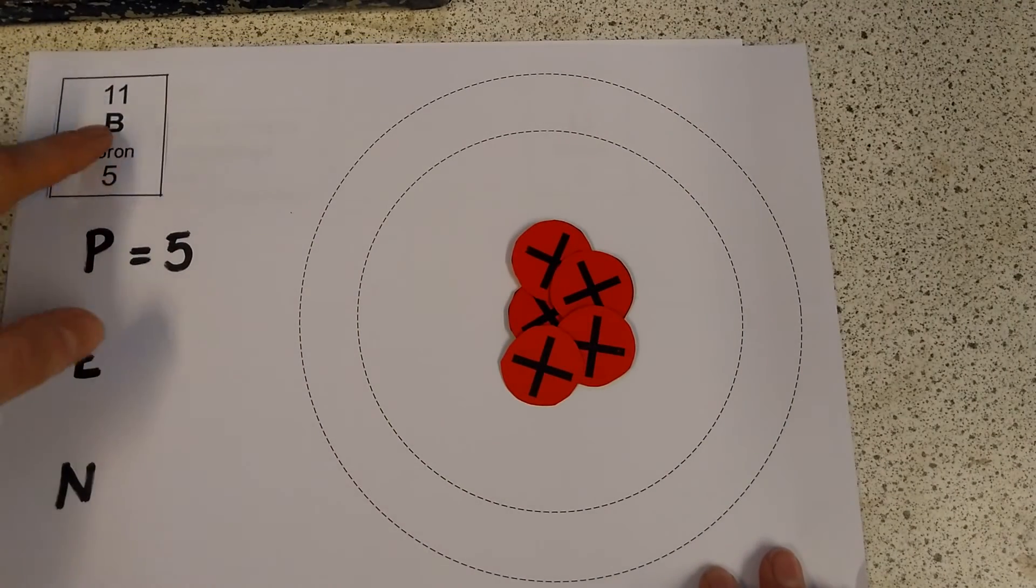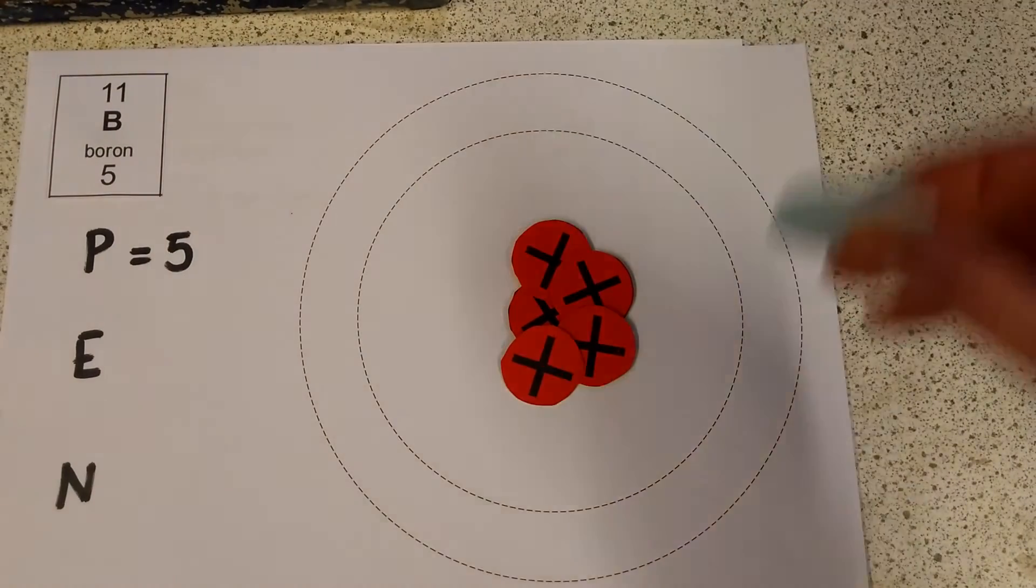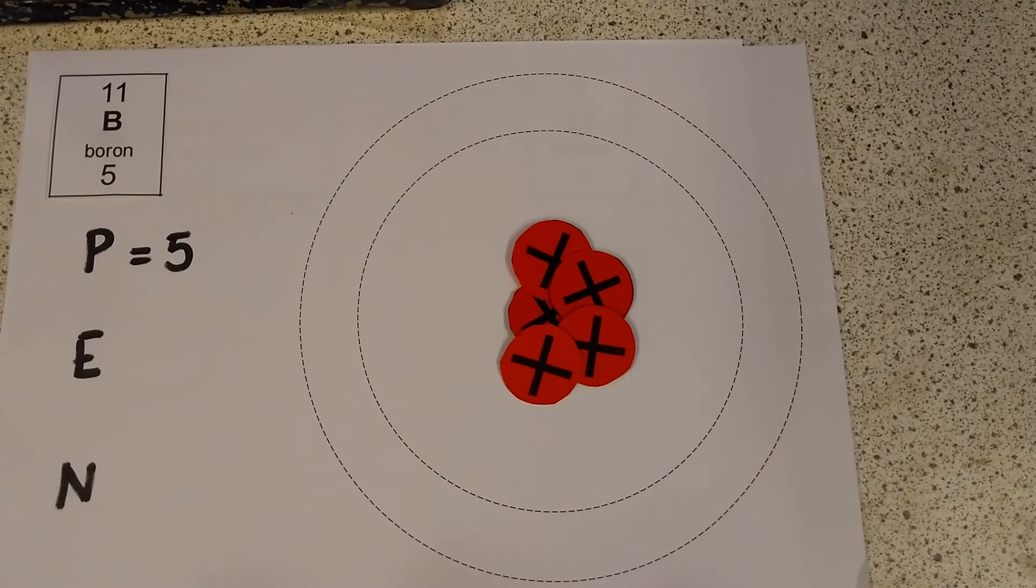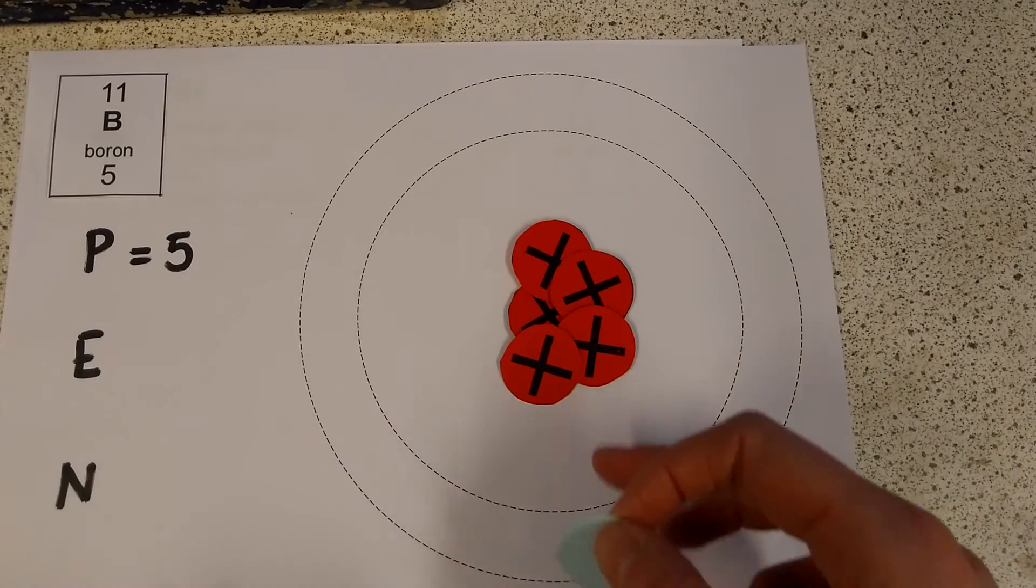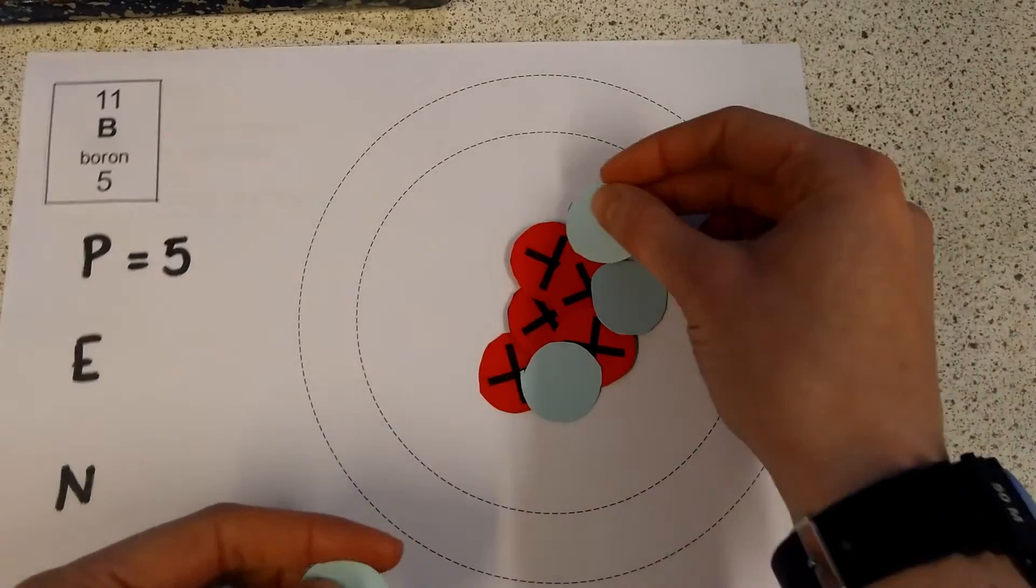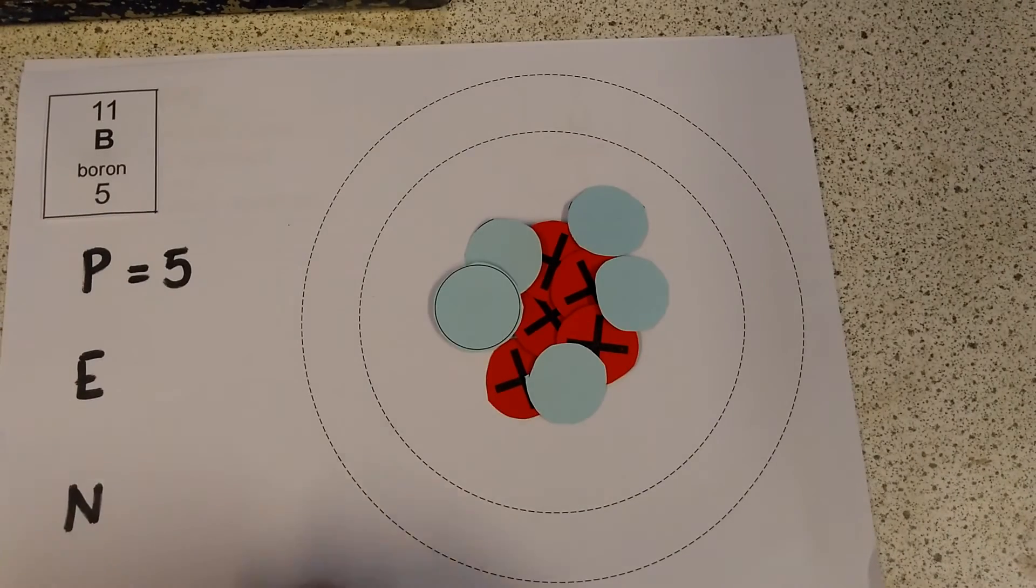And then we're going to look at the mass. We're going to look at the fact that this atom has a mass of 11. It weighs 11. And since the protons have a mass of 1, and the neutrons have a mass of 1, I'm just going to add things until I get to 11. So I've got 1 neutron, 2 neutrons, 3, 4, 5, and 6 neutrons.